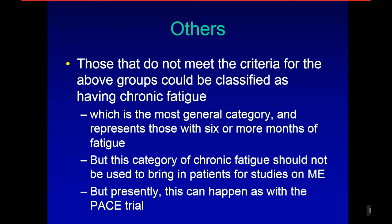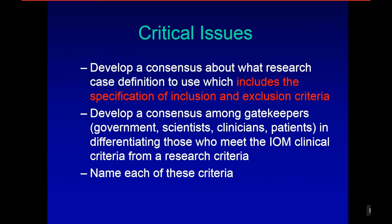To summarize: the critical issues are developing a consensus about what research case definition to use, which includes specification of inclusion and exclusion criteria. It's not enough just to have a research criteria — you also have to operationalize it. We need to develop a consensus among gatekeepers: governments, scientists, clinicians, and patients in differentiating those who meet the IOM clinical criteria from a research criteria. We also have to come up with a name for both the clinical criteria and the research criteria. Those are our tasks for the upcoming future.